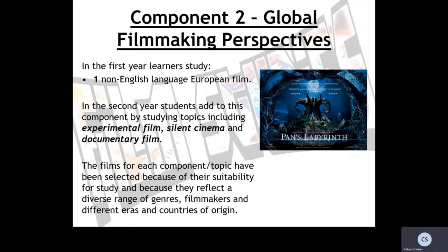For Component Two — Global Filmmaking Perspectives — in the first year, students only study one film for this component, which is Pan's Labyrinth, our one non-English language European film. The majority of this component is studied in the second year and includes topics such as experimental film, silent cinema and documentary film, in addition to studying another example of a non-English language foreign film. The films chosen for each component have been selected because of their suitability for study and because they reflect a diverse range of genres, filmmakers, and different eras and countries of origin.